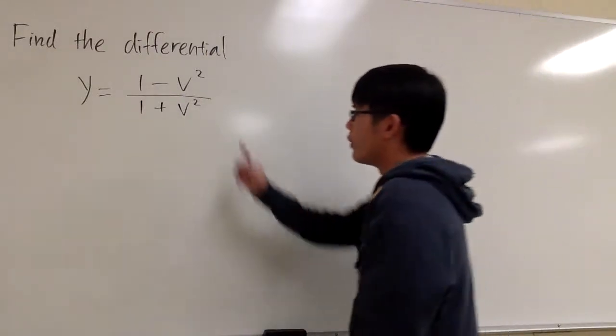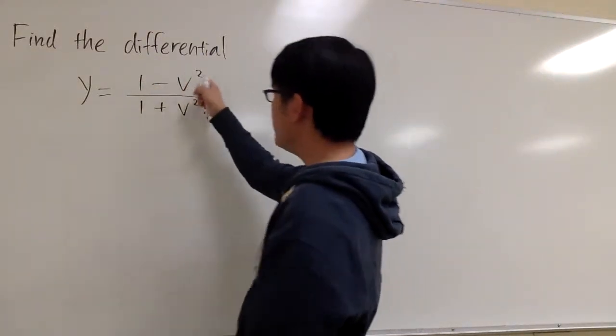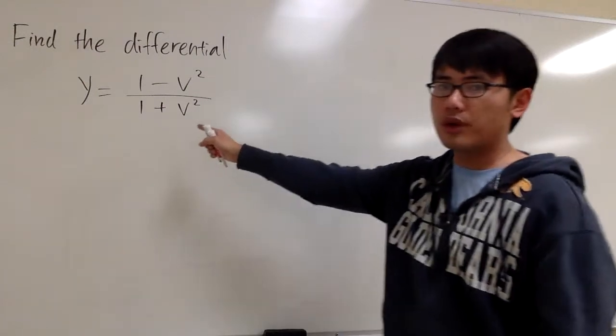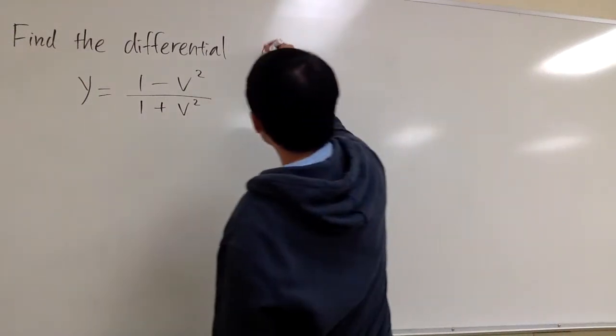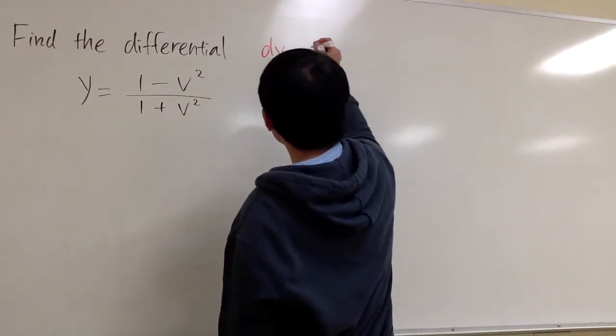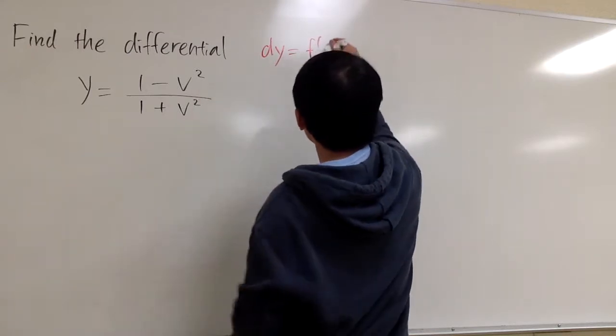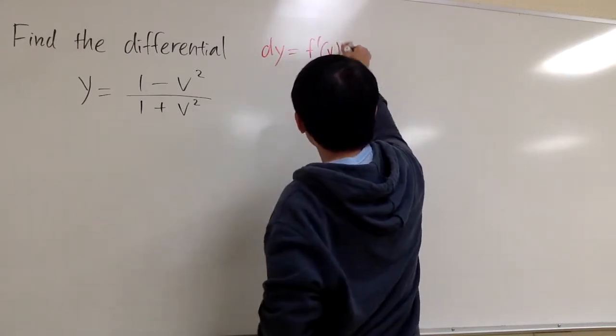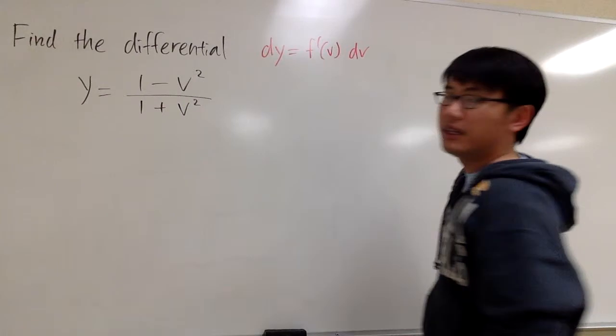Let's find the differential for y equals 1 minus v squared over 1 plus v squared. And for differential, the formula is dy equals the derivative of the function, so y prime of v, and we multiply by dv on the side.